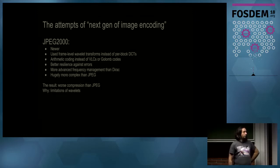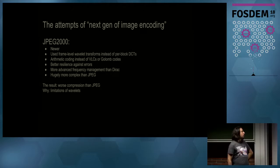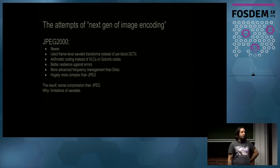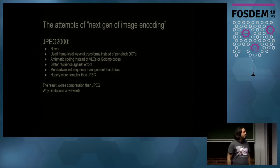Another codec which tried to revolutionize image coding was JPEG 2000. It's newer than JPEG, so you'd expect it to be far better, but it isn't. It uses all kinds of new techniques to compress images better, but it doesn't do a much better job than JPEG. It's a shame that nowadays it's being used in the cinema industry, and VoC are complaining that they cannot decode DCPs fast enough.